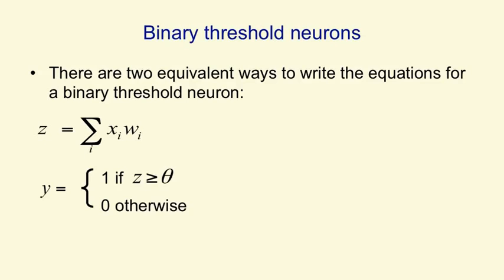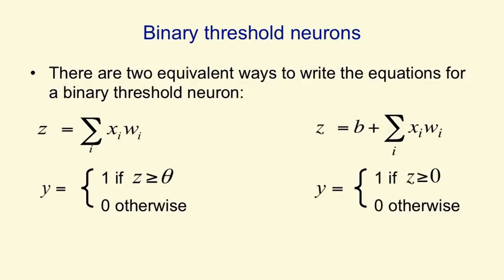Alternatively, we could say that the total input includes a bias term. So the total input is what comes in on the input lines times the weights, plus this bias term. And then we can say the output is 1 if that total input is above 0, and is 0 otherwise. And the equivalence is simply that the threshold in the first formulation is equal to the negative of the bias in the second formulation.